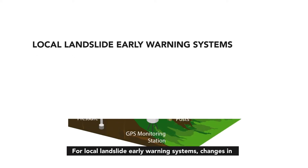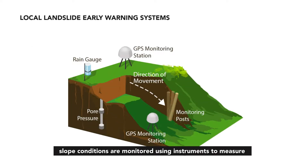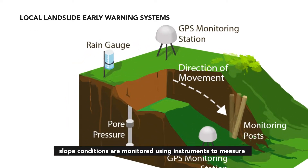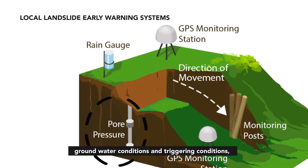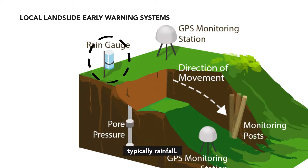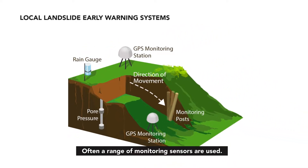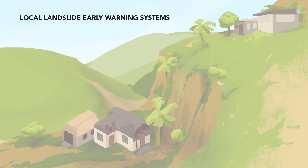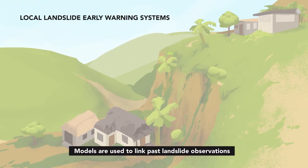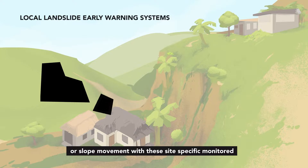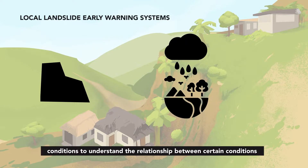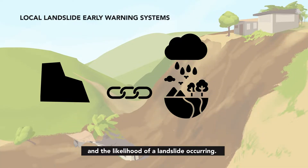For local landslide early warning systems, changes in slope conditions are monitored using instruments to measure the movement of slope materials as well as groundwater conditions and triggering conditions, typically rainfall. Often a range of monitoring sensors are used. Models are used to link past landslide observations or slope movement with these site-specific monitored conditions to understand the relationship between certain conditions and the likelihood of a landslide occurring.